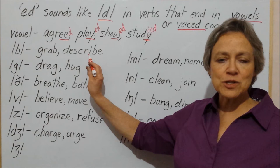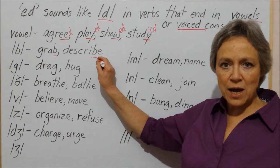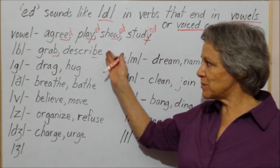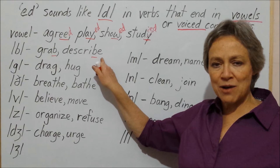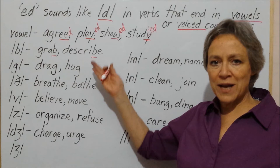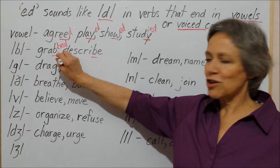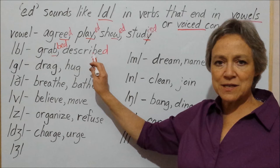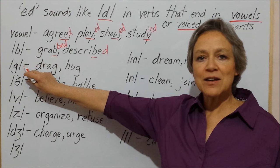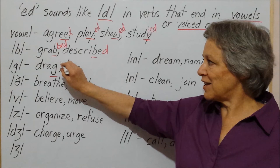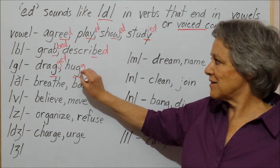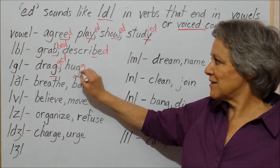Here I have two verbs which end in the voiced sound /b/ — 'grab' and 'describe'. Notice that many verbs have a silent E at the end, so the last sound in 'describe' is the /b/ sound. So when I add the ed ending, I get 'grabbed' and 'described'. Here I also have two words ending in the voiced /g/ sound — 'drag' and 'hug'. When I add ed, I get 'dragged' and 'hugged'.